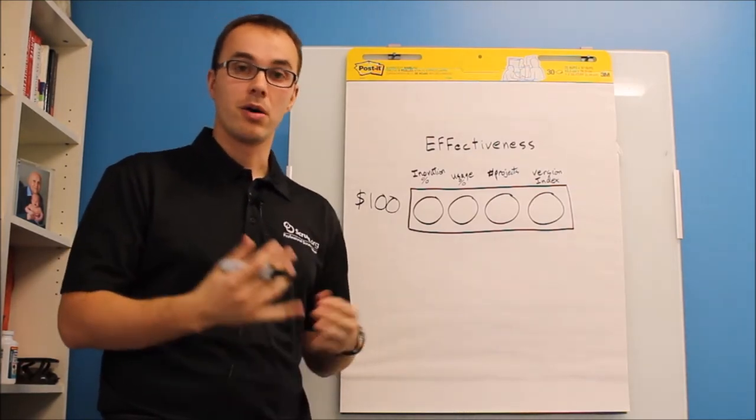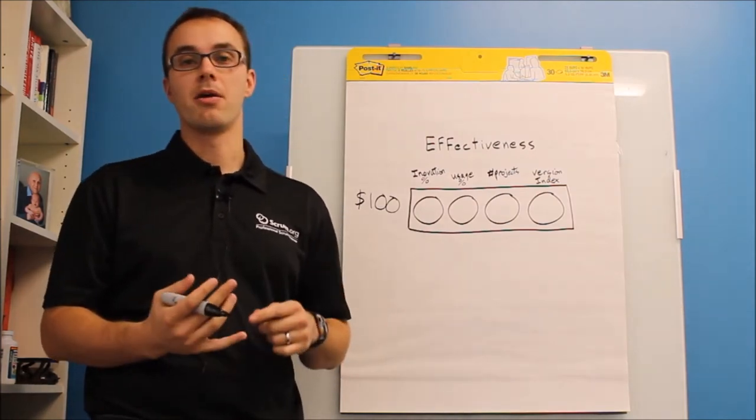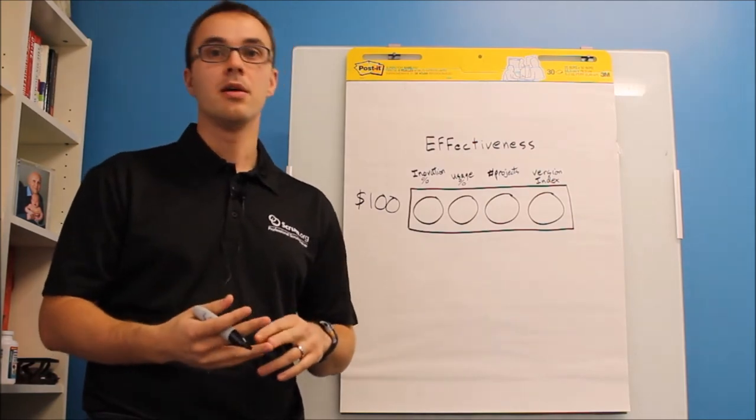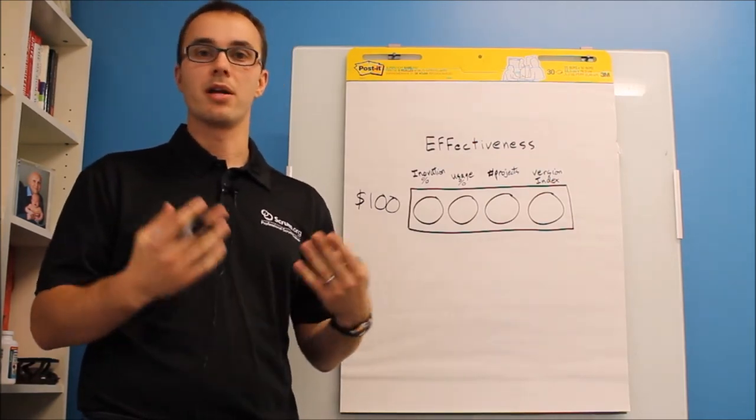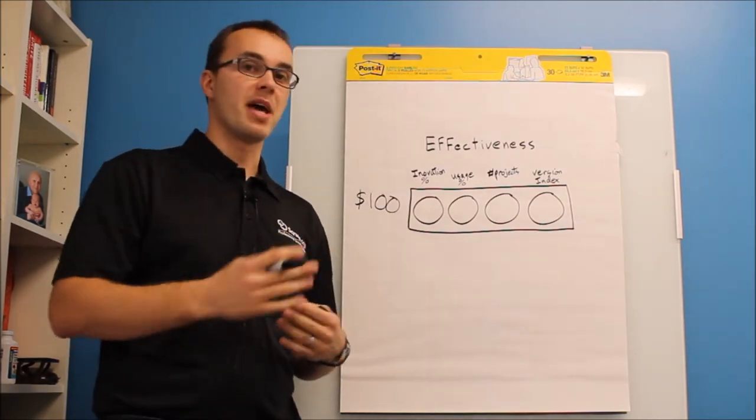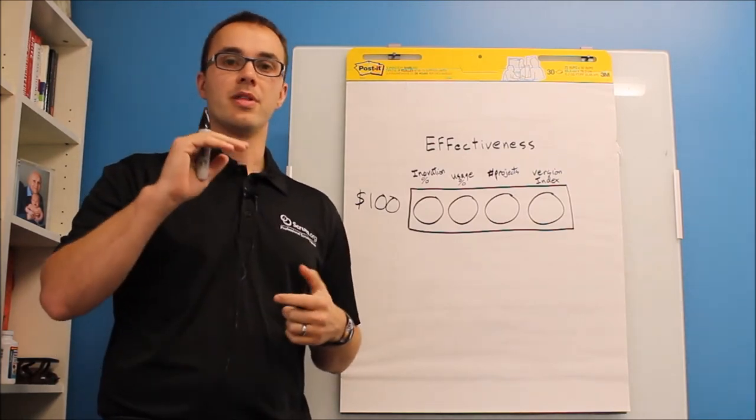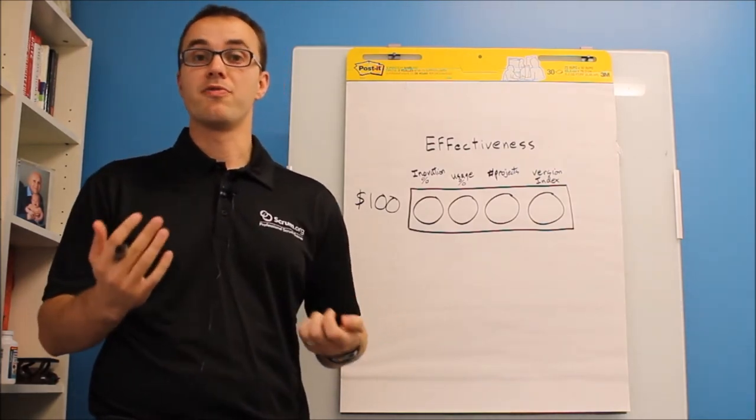The first one is something we call innovation rate. Of every $100 you spend, how many of them are being spent on maintenance, bug fixes, cost of life. Are you doing maintenance on your servers? How much are you paying for backend? So it's sort of like a total cost of ownership for your product over the amount of money you're spending on new features.